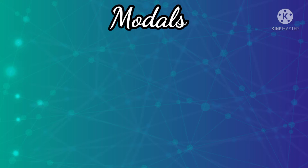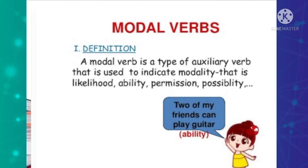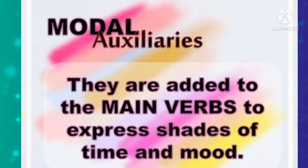Go through it and you will get the use of it. A modal verb is a type of auxiliary verb used to indicate modality — that is, likelihood, ability, permission, or possibility. We use them to make sentences, especially in spoken language. For example: 'Will you come?' 'Shall we go?' These models help us indicate likelihood, ability, permission, and possibility. They are added to main verbs to express shades of time and mood.